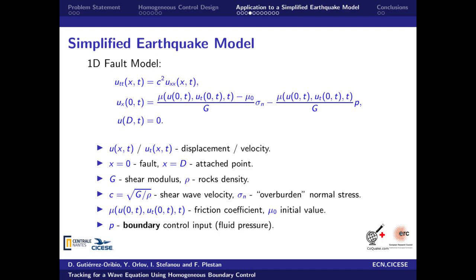x equal to d represents an attached point far from the fault. G is the shear modulus, rho is the rock's density surrounding the fault, and c is the shear wave velocity. On the frictional interface, we apply the difference between the constant effective overburdened normal stress, sigma n, and the pressure of the fluid injected or extracted into or from the fault-like interface, p.